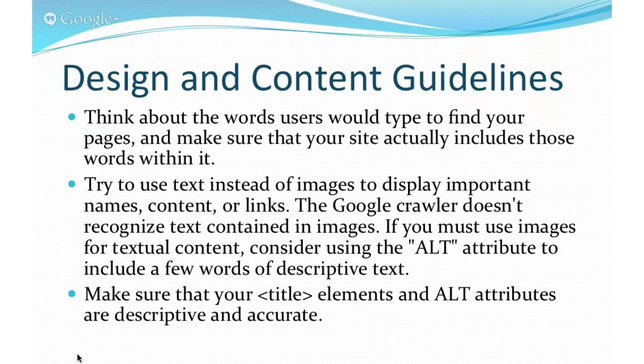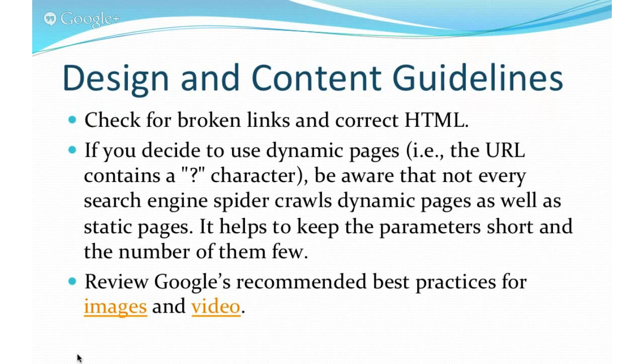Think about the words users use to find your pages and make sure your site actually uses those words. Try to use text instead of images to display important names, content, or links — the Google crawler doesn't recognize text contained in images. If you must use images for textual content, consider using the alt attribute and include a few words of descriptive text. Make sure that your title elements and alt attributes are descriptive and accurate. Also check for broken links and correct HTML.